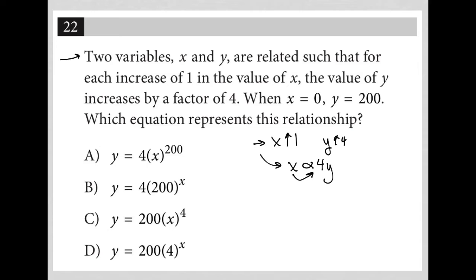So the question goes on to say when x equals 0, y equals 200. So I know I have an ordered pair here, 0 comma 200. Which equation represents this relationship? So what relationship? We have two things that have been provided. We have the idea that when x goes up by 1, y should go up by 4, or 4 times that value. 4 times. And we know that when x is 0, y is 200.